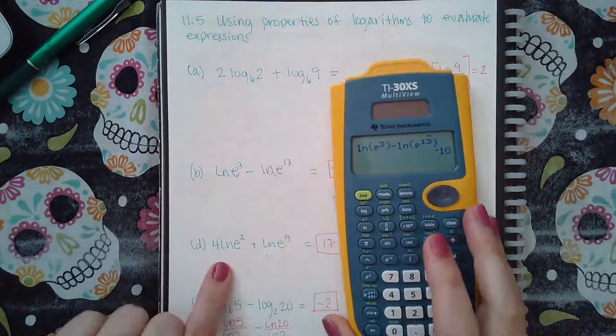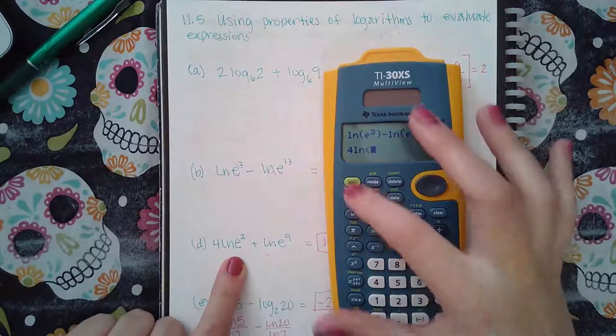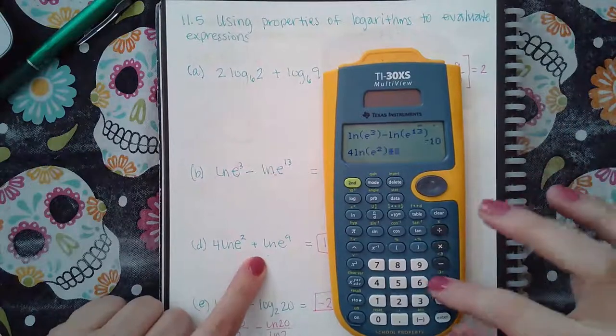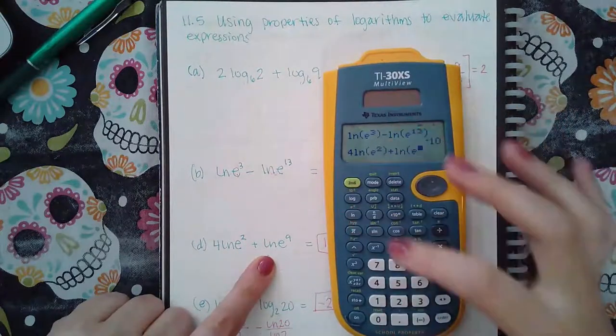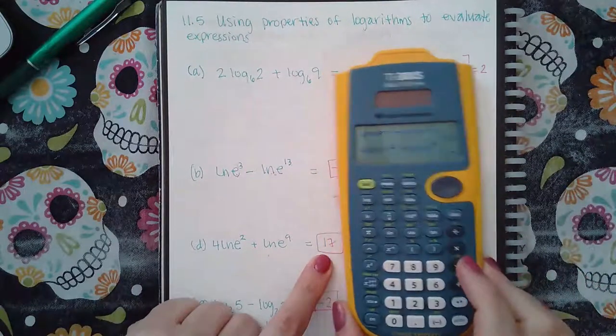Here, same thing. I have an ln button, so I can type this in. Four ln, second ln, two, get down, close, plus ln, second ln, nine, get down and close. It'll tell me the answer is 17.